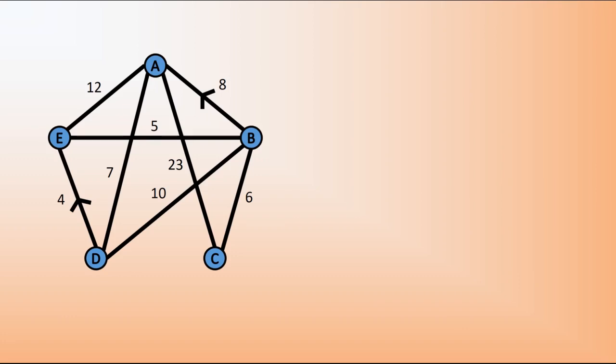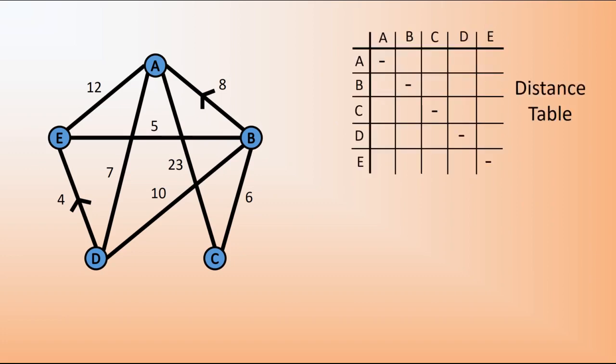The first thing that we need to do is to create a distance table. All we need to do is have rows and columns for each of the vertices, and I've indicated a dash for each of the vertices to themselves — the distance from A to A is not of relevance. We simply put a dash to indicate that we don't want to travel from A to A. Then we go through looking at each of the arcs and putting the appropriate distances on.